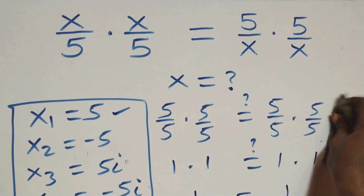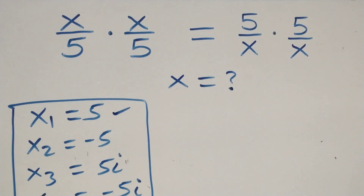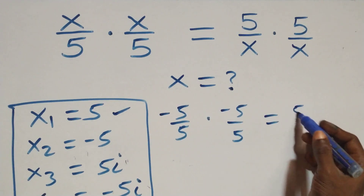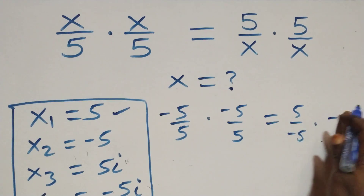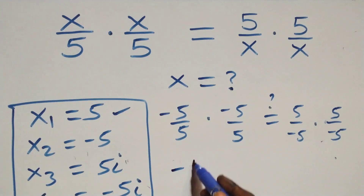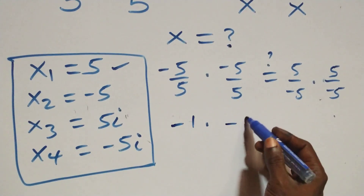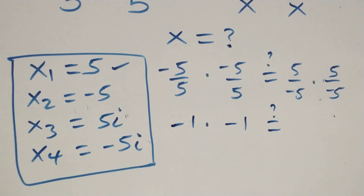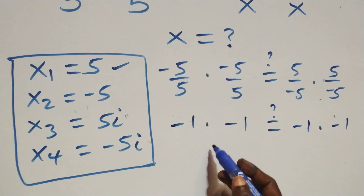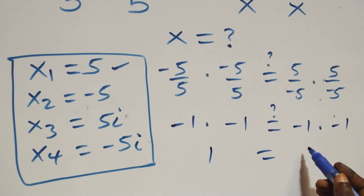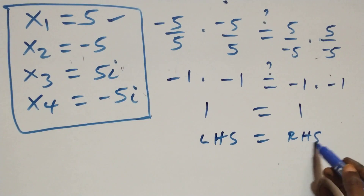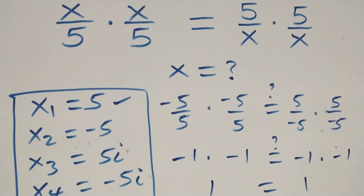Also, substituting minus 5 into the equation: (minus 5 over 5) times (minus 5 over 5), is it equals to (5 over minus 5) times (5 over minus 5)? That's minus 1 times minus 1, which gives plus 1, equals minus 1 times minus 1, also plus 1. Left hand side equals to the right hand side, so minus 5 also satisfies this given problem.